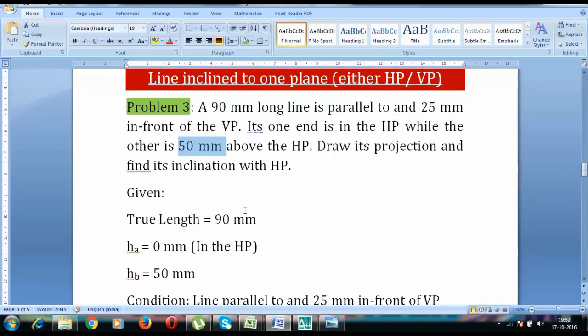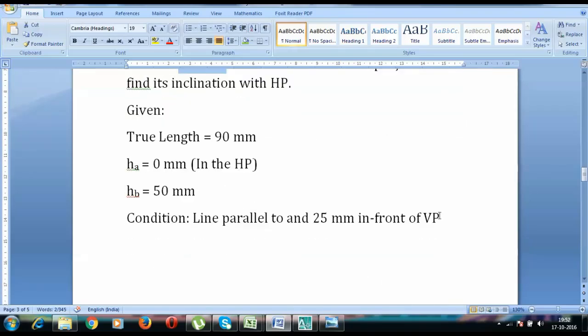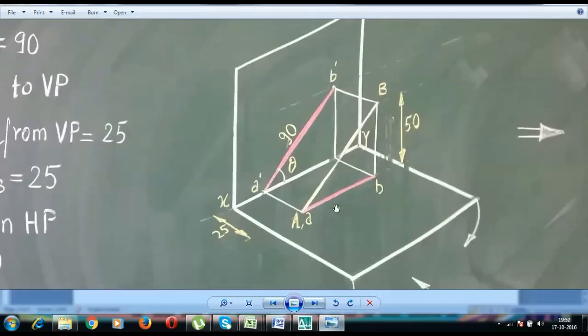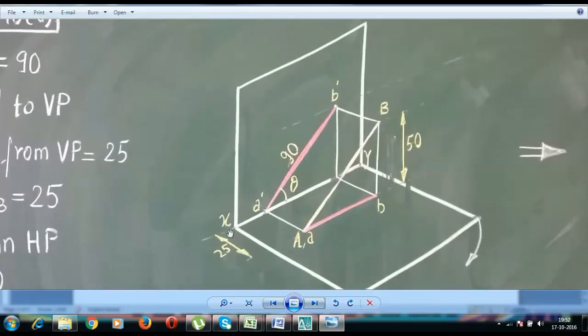So the line is parallel to VP and in front of VP. And this is how the line has been positioned. This line over here, you can clearly see that this line is parallel to this vertical plane. This is the vertical plane.